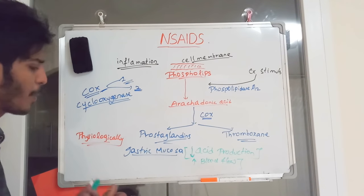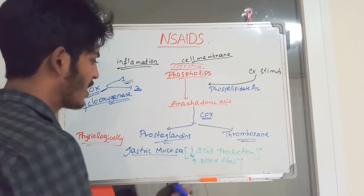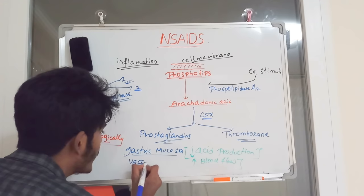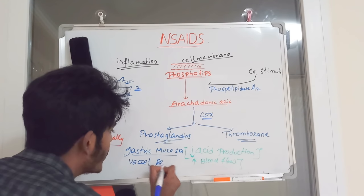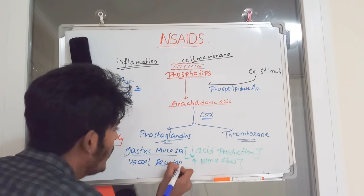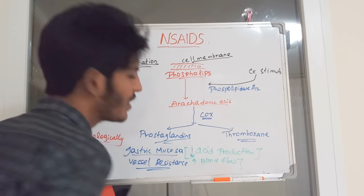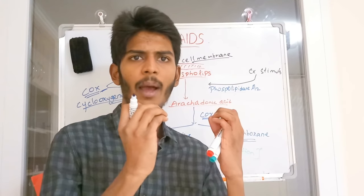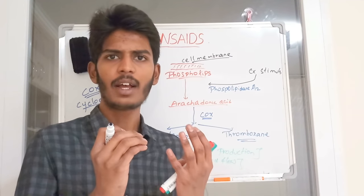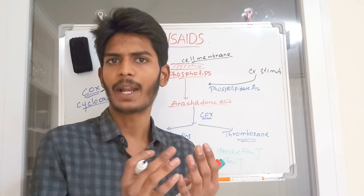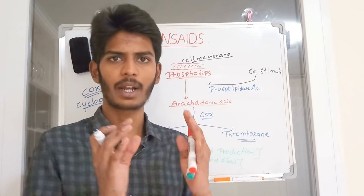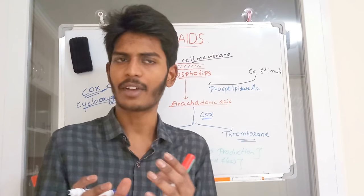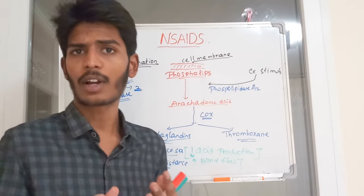Prostaglandins are also involved in small vessels such as arterioles, where they help maintain vessel resistance. This regulates blood flow to parts of the body and contributes to blood pressure maintenance to a certain extent — not systemically, but locally.